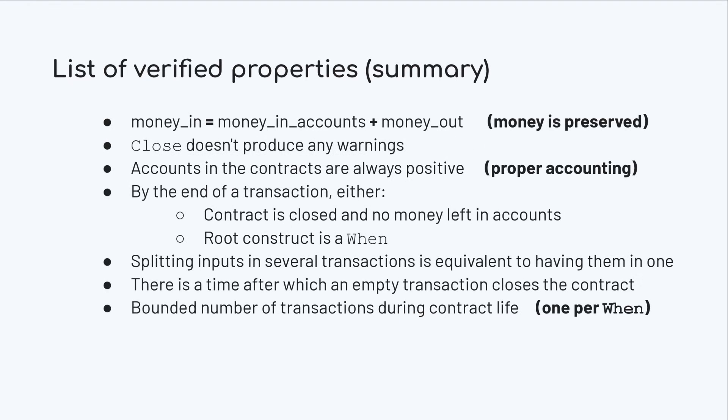This is the list of properties we just went through: money is preserved; close doesn't produce any warnings; accounts are always positive; by the end of a transaction the contract is quiescent; splitting inputs into several transactions is the same as keeping them in one; there is an expiration date for every contract; and there is a bound to the number of transactions a contract can receive through its life.